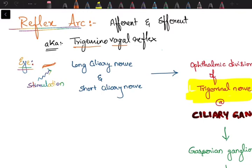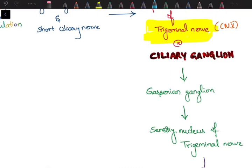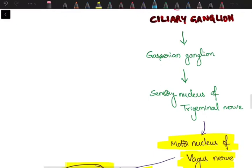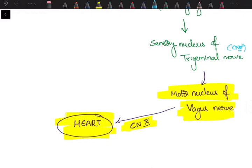For example, when you give a stimulus to the muscle, the stimulation is carried by long ciliary nerve and short ciliary nerve to the ciliary ganglion, then to the ophthalmic division of trigeminal nerve, which is cranial nerve 5. This relates to the Gasserian ganglion, from where information goes to the sensory nucleus of trigeminal nerve. This is the afferent pathway.